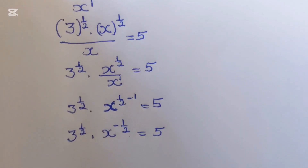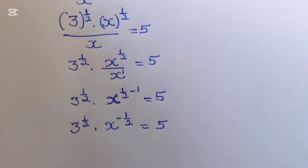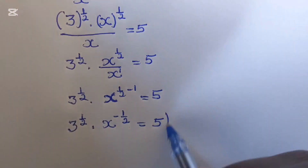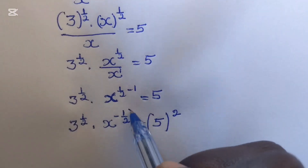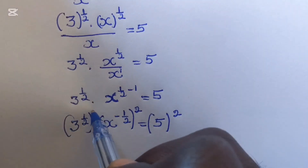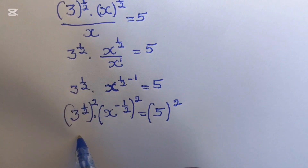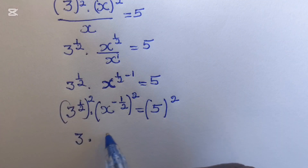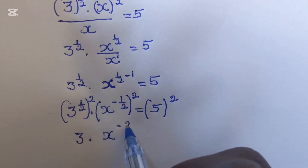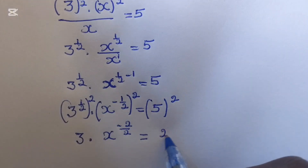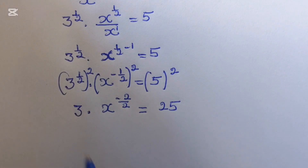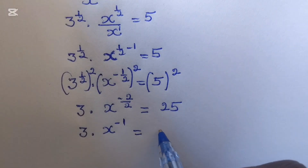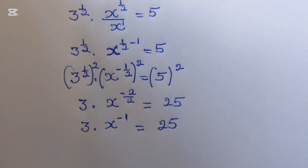Now we want to remove this negative exponent. We can square both sides — multiply both sides by the power of 2. This gives 3^1 times x^(1/2 · 2 − 1 · 2)... simplifying: 3 times x^(−1+1)... arriving at 3 times x^1 equals 25, so 3x = 25.